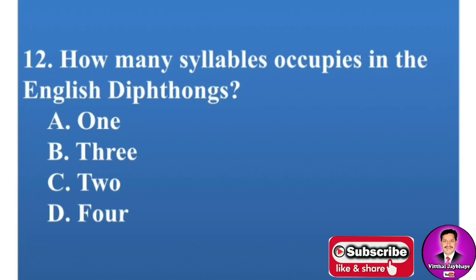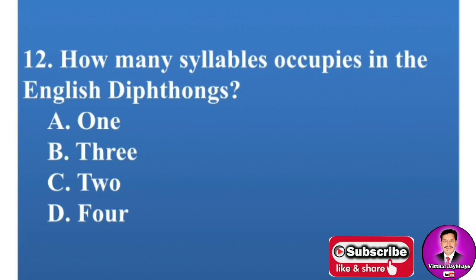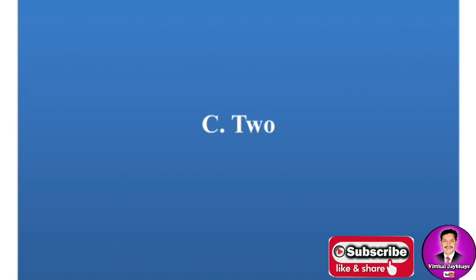Next MCQ: How many syllables does an English diphthong occupy? Options are: A, 1; B, 3; C, 2; D, 4. The correct answer is C — 2. A diphthong is the combination of two vowel sounds within one syllable.